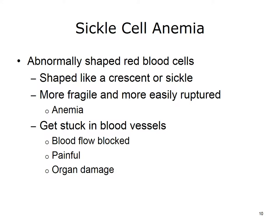Sickle cell anemia is another blood disorder. It is a disease in which the body produces abnormally shaped red blood cells. The cells are shaped like crescents or sickles. These blood cells are more fragile than normal round red blood cells and more prone to rupture. This, in turn, leads to anemia. The sickle cells also get stuck in blood vessels, blocking blood flow, which can cause pain and organ damage.